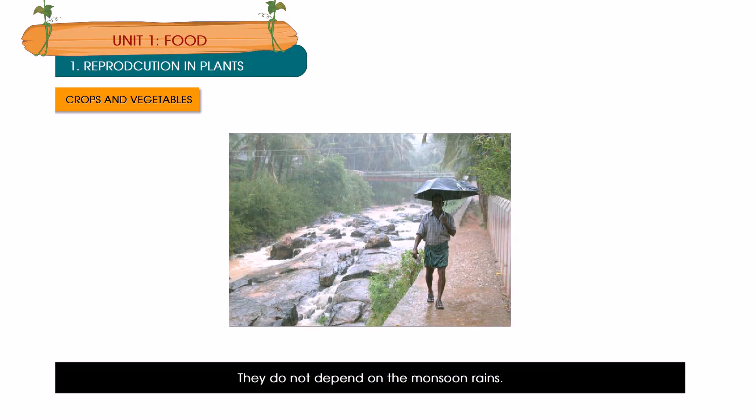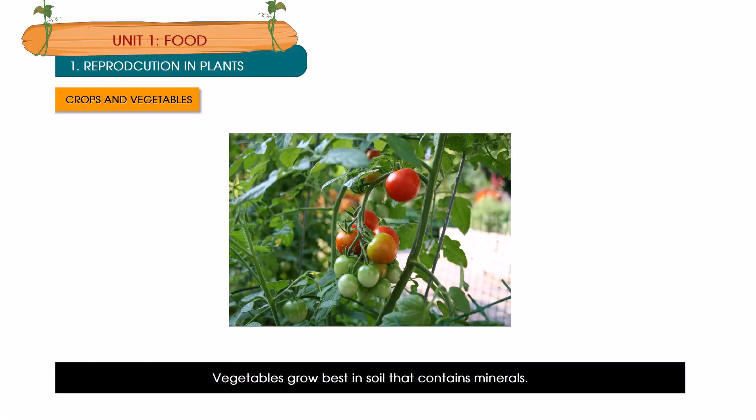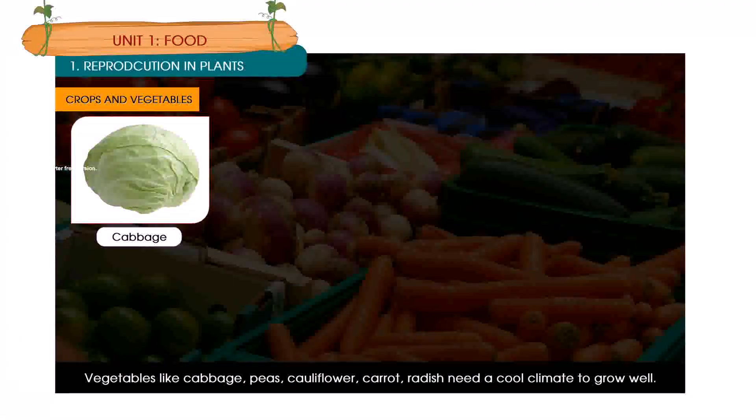Crops that grow from June to October are Kharif crops. They depend largely on the monsoon rains. Examples are wheat, beans and legumes. Vegetables grow best in soil that contains minerals. Vegetables like cabbage, peas, cauliflower, carrot, and radish need cool climate to grow well. Vegetables like brinjal and pumpkin need a warm climate.